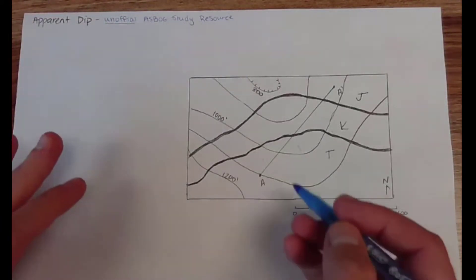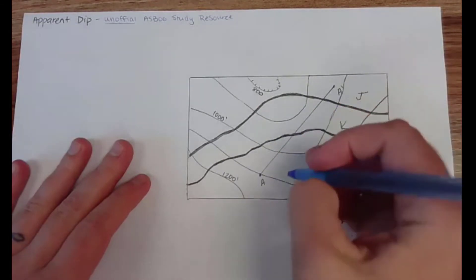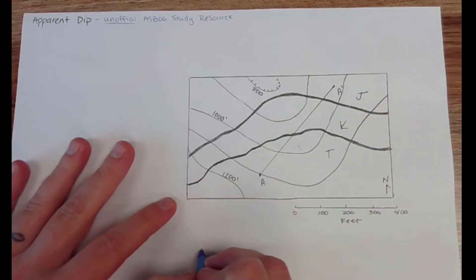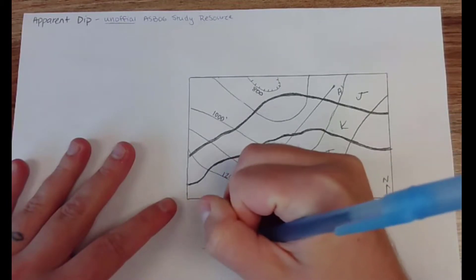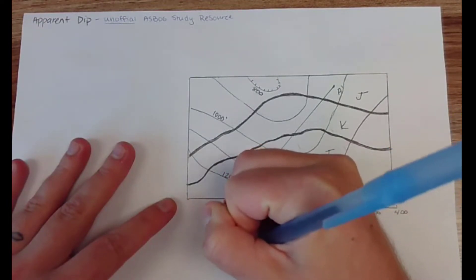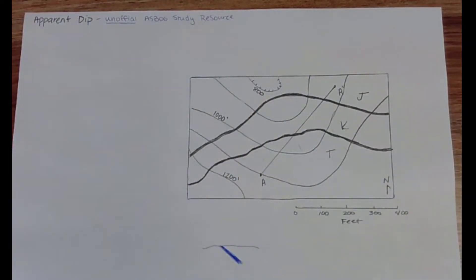So let's say you make a cross-section from A to A prime, and this doesn't have to be on this map, but you might make a cross-section where some beds look like they are dipping like this. Now in real life those beds could be dipping that angle or they could be dipping greater than that angle. This is considered the apparent dip along that cross-section line.